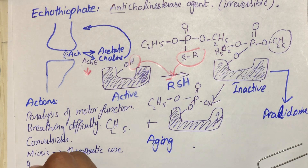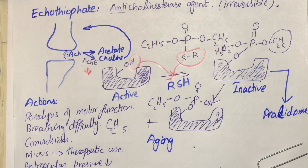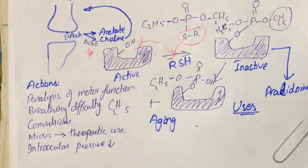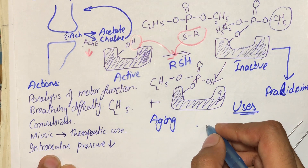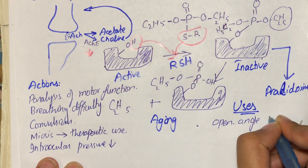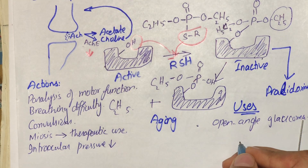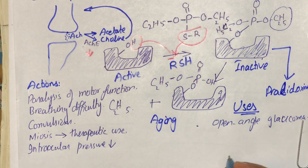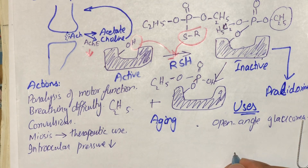This miosis is actually a therapeutic use of this drug. It also has an action on intraocular pressure, which falls intensely due to increased outflow of aqueous humor. Therapeutic uses include decreasing intraocular pressure, so it can be used for open-angle glaucoma. However, it is rarely used due to its side effect profile, which includes risk of causing cataracts and other cholinergic crisis.